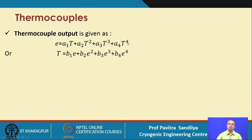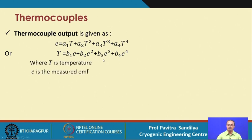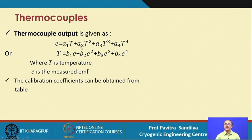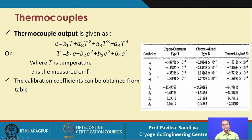There are various polynomial expressions to correlate EMF with temperature. The first expression shows how EMF depends on temperature and the second shows how temperature depends on EMF — both obtained empirically from experimental data using curve fitting or regression. The coefficients a and b can be obtained from standard tables; values are shown for copper-constantan (type T), chromel-alumel (type K), and chromel-gold thermocouple types.